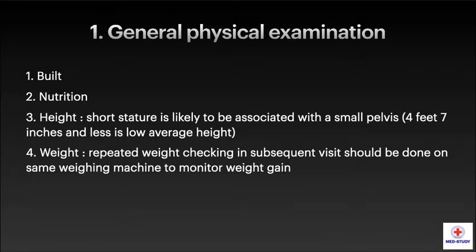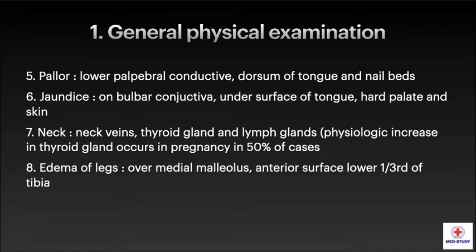Continuing with general physical examination, we have to see pallor on the lower palpebral conjunctiva, dorsum of the tongue, and nail beds. We have to see for jaundice on bulbar conjunctiva, undersurface of the tongue, hard palate, and skin. We have to examine the neck and rule out neck vein distension, thyroid gland enlargement, and lymph gland enlargement.